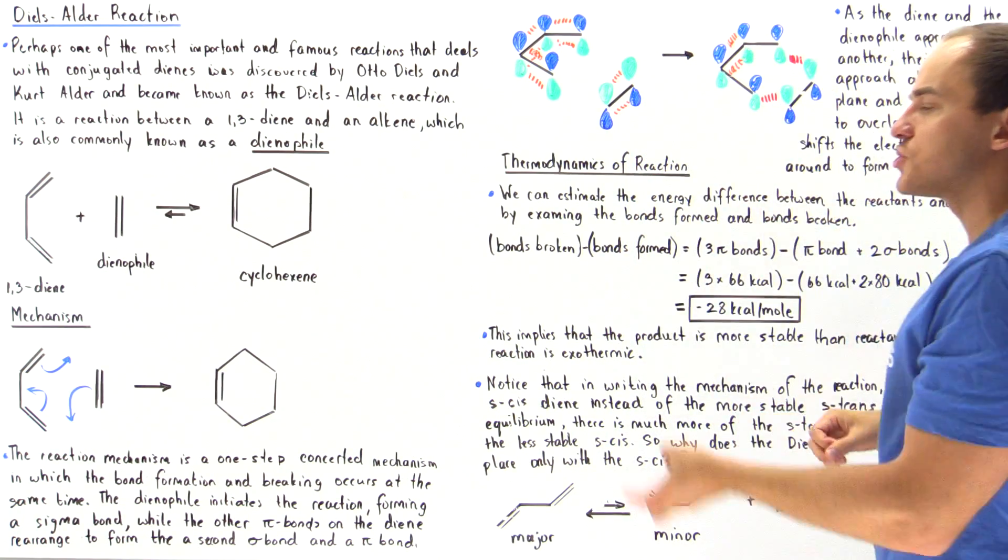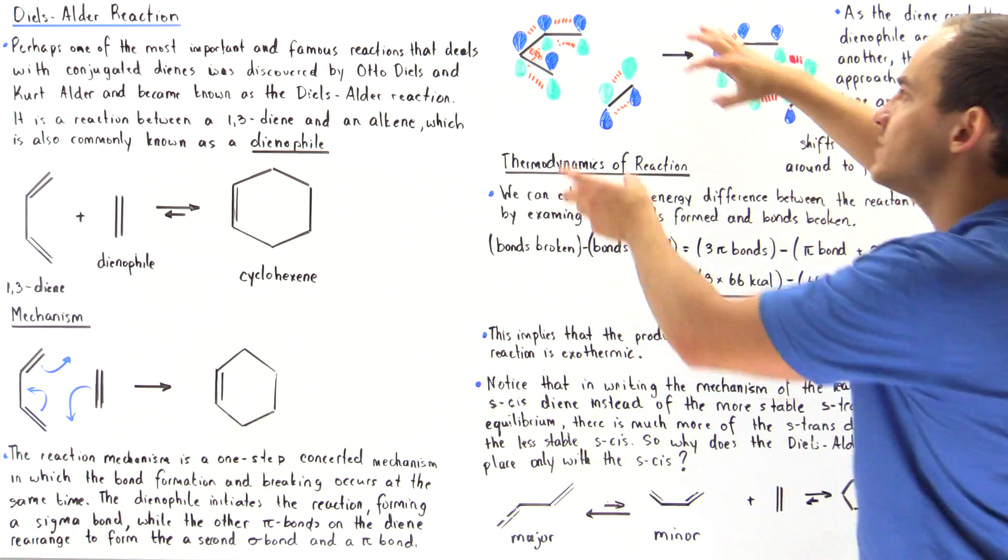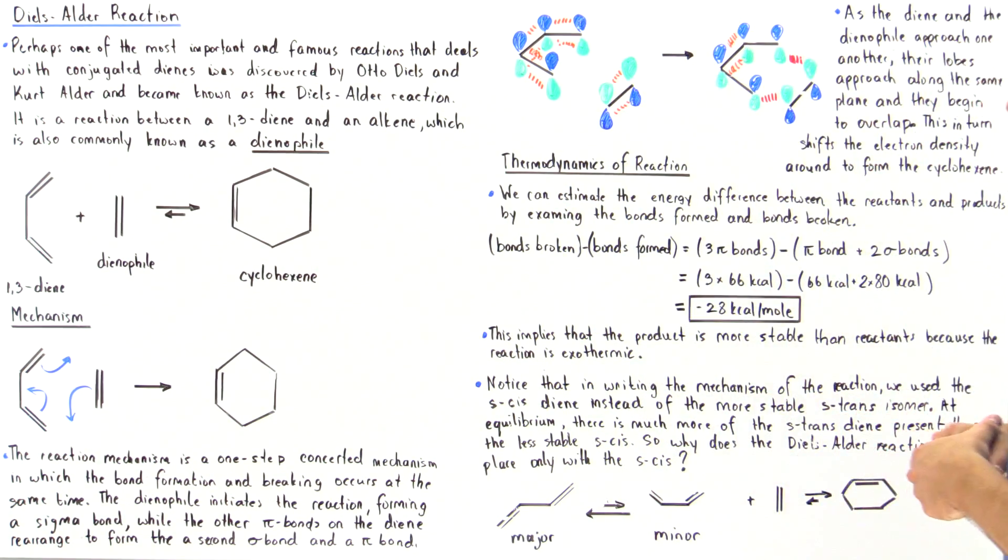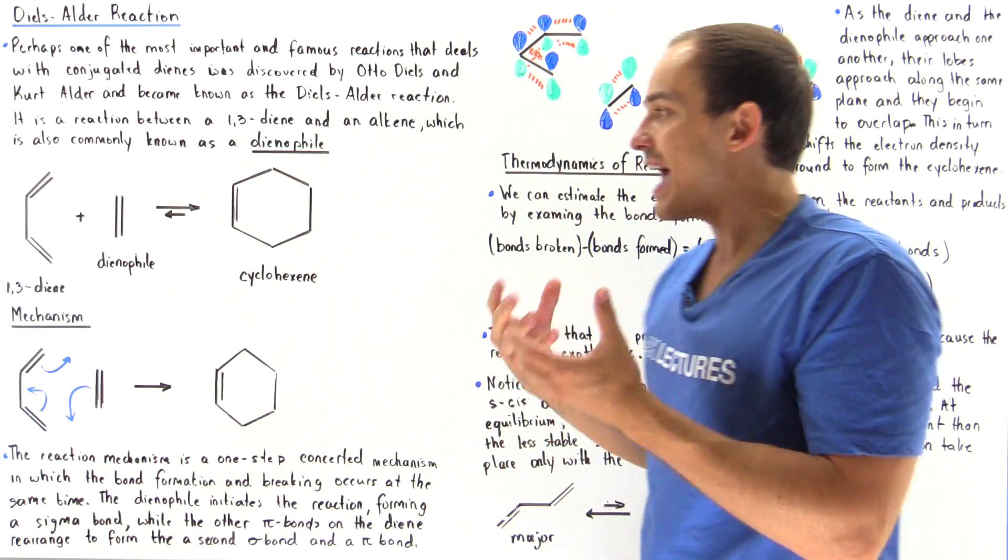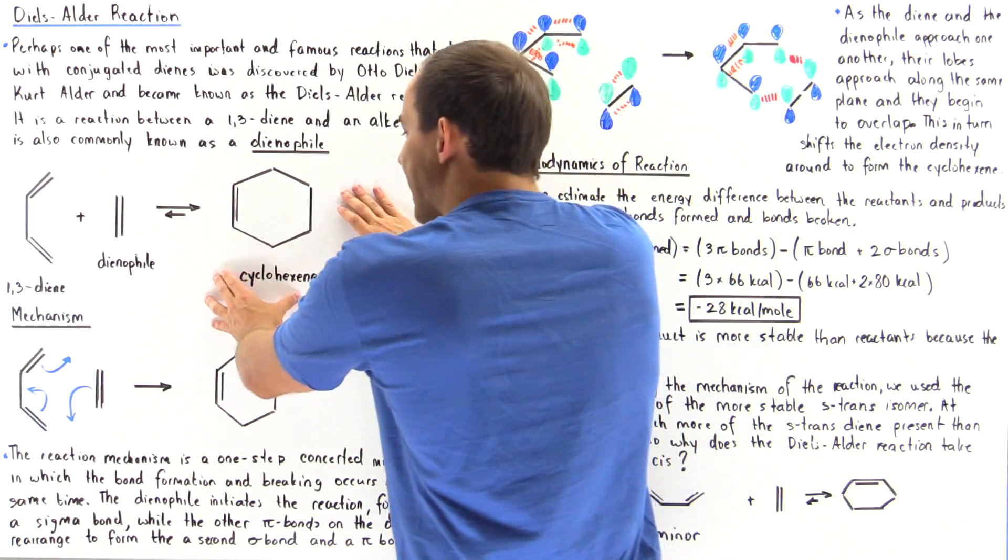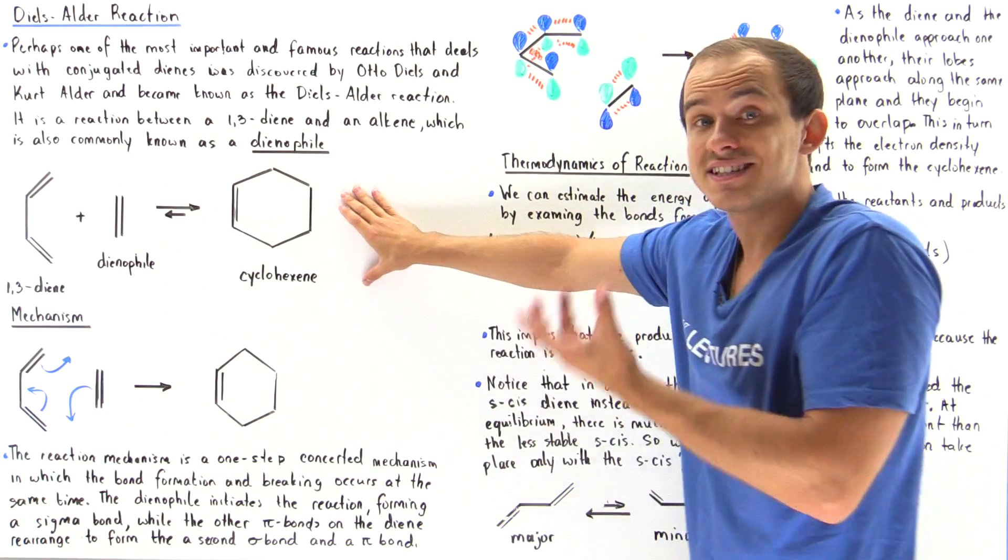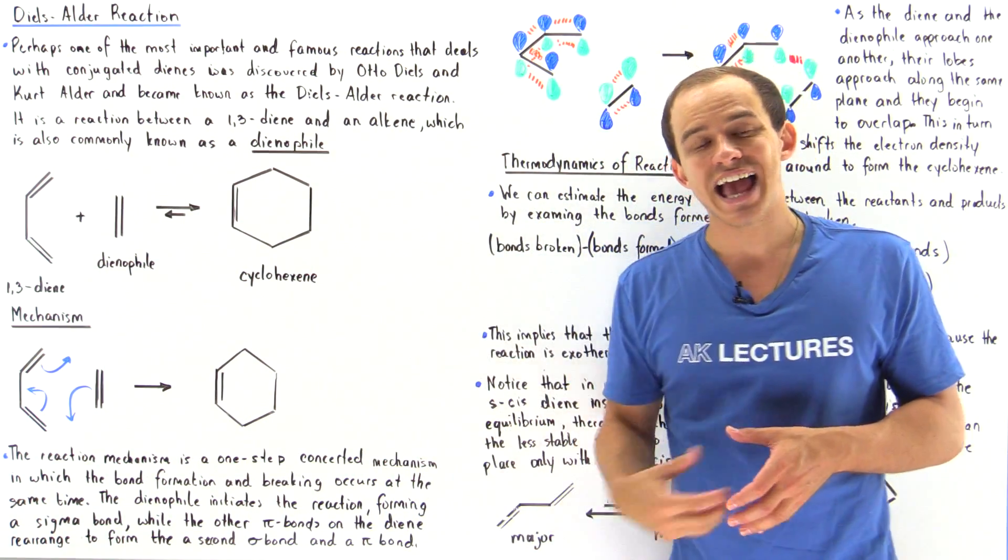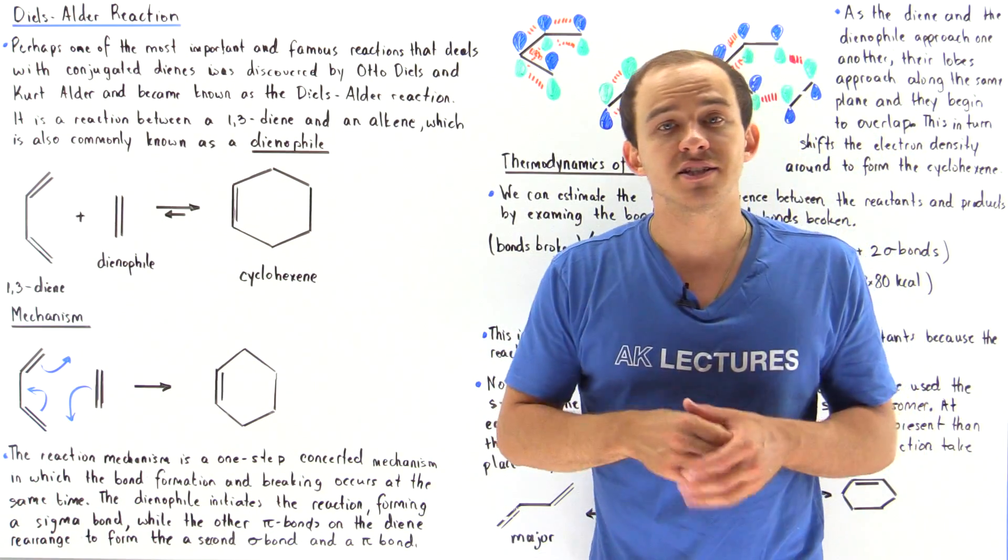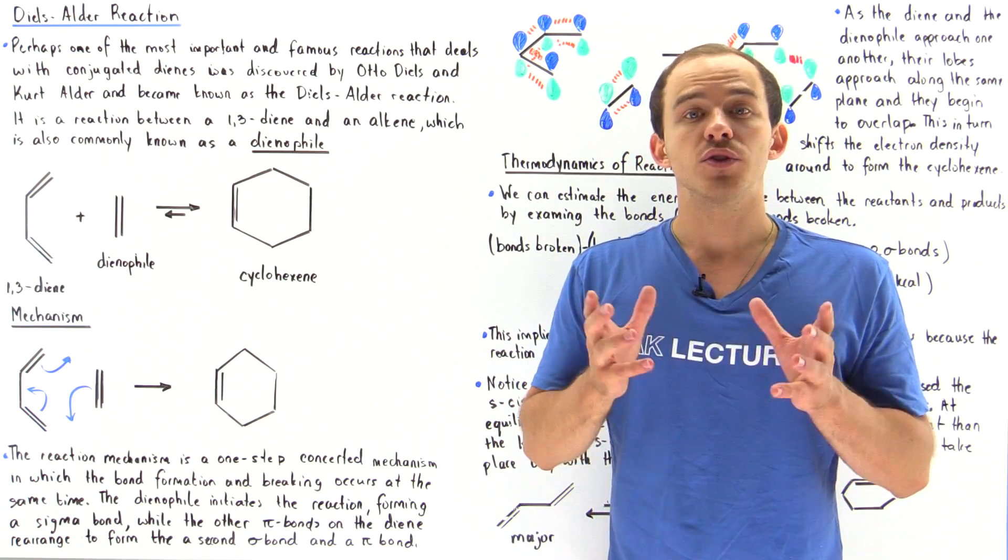is because this overlap between the green lobes of the orbitals must actually take place to form our sigma bonds. And finally, the thermodynamics of this reaction tells us that the cyclohexene is more stable than the reactants. This reaction releases energy and that means the reaction is exothermic.